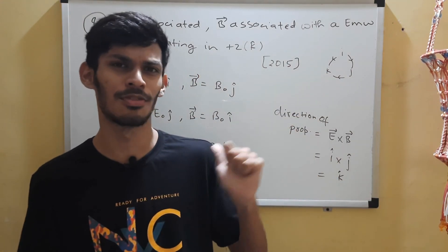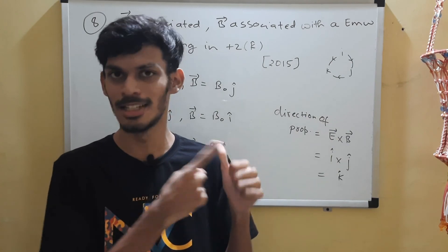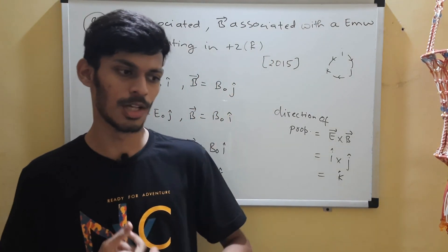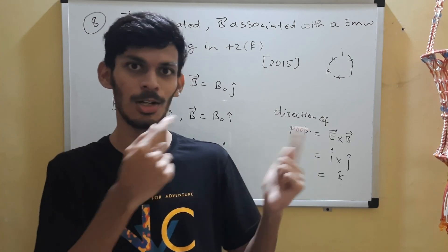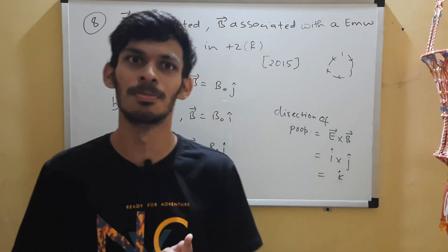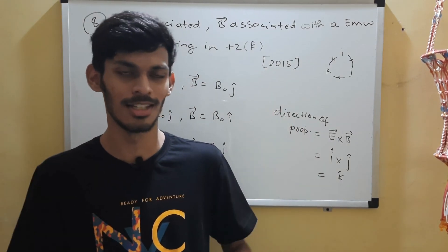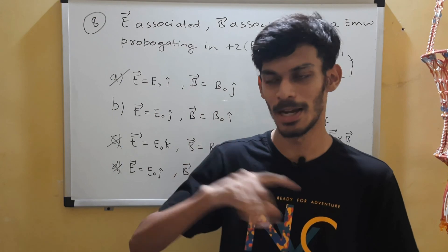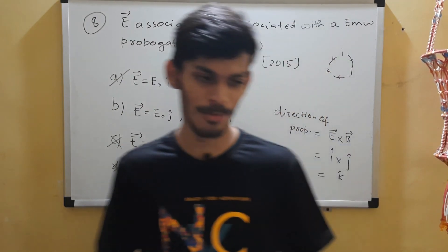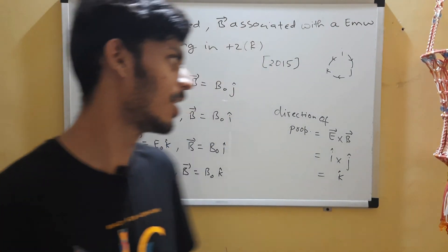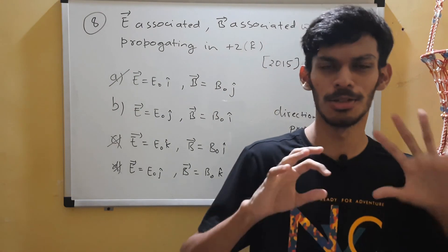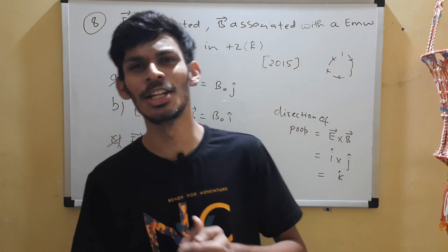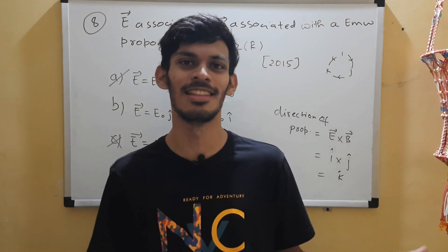Major BITSET questions come from four to five topics: displacement current, speed relations (C = E₀/B₀), spectrum/fact-based questions from the last few pages of NCERT, energy and momentum, and direction-based questions about wave propagation, electric field, and magnetic field directions. Focus on these topics. I hope you enjoyed today's class — smash like, subscribe, and I'll see you in the next class. Till then, keep enjoying physics.